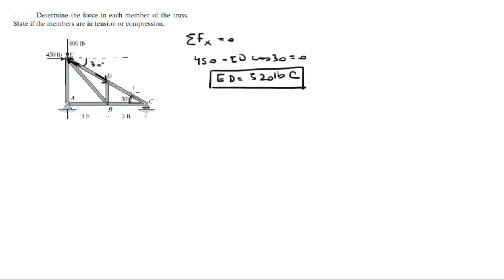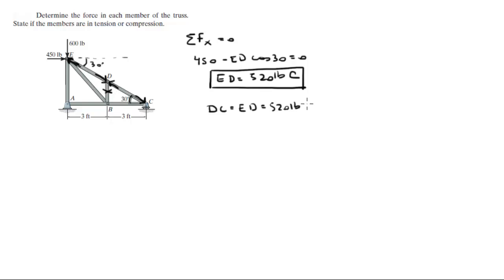Now, if you go to joint D, you see you get a vertical line, so this is a zero-force vector. And this reacts this way. So DC is equal to Ed — it is equal to 520 pounds in compression.